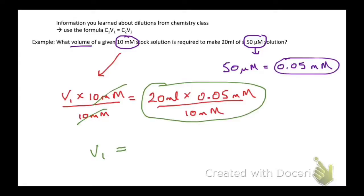V1 will then equal, we can simplify the 10 and the 20 to 2 mils times 0.05, which equals 0.1 mil, or 100 microliters.